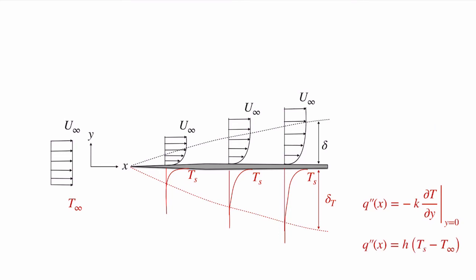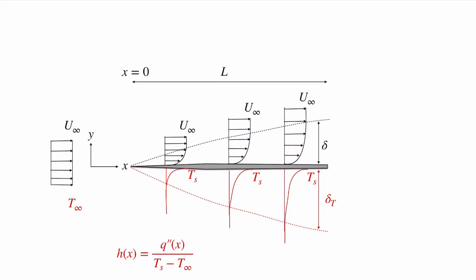Going back to the heat transfer: right at the surface where the velocity is zero, we have pure conduction, and all of the energy leaving the plate into the flow is given by Fourier's law. We want to characterize this using a convection coefficient. We can determine the convection coefficient if we know this temperature gradient, because we can apply Newton's law of cooling and say that the same heat flux equals a convection coefficient times the temperature at the surface minus the ambient temperature T infinity. We can calculate h(x) from the temperature profile, and h will vary because the gradient is varying — it's a function of x, equal to that local heat flux divided by Ts minus T infinity.